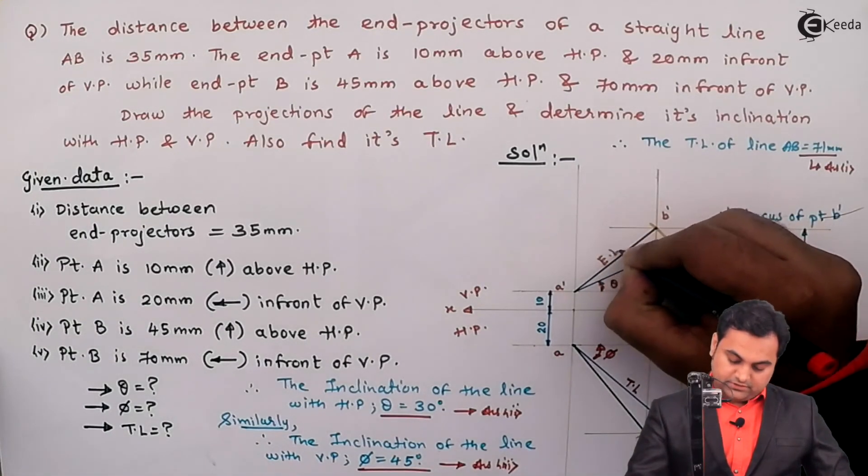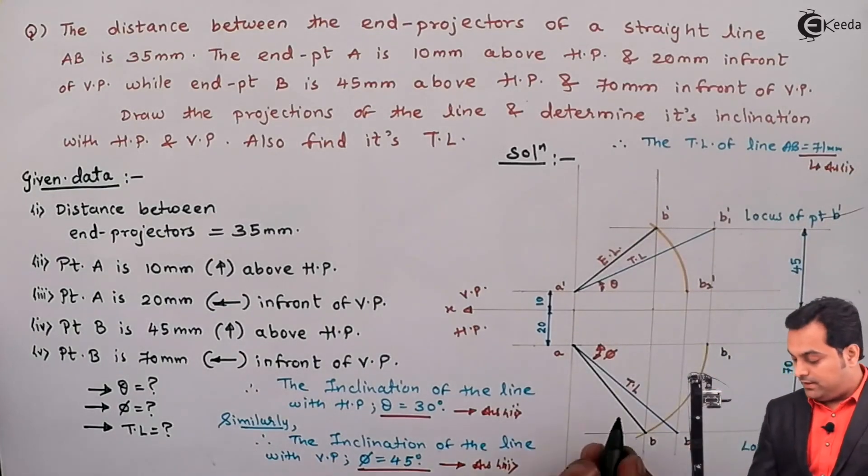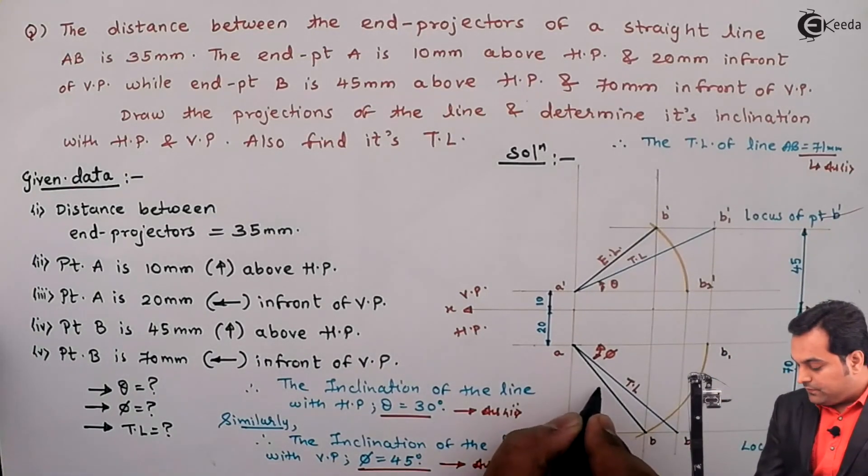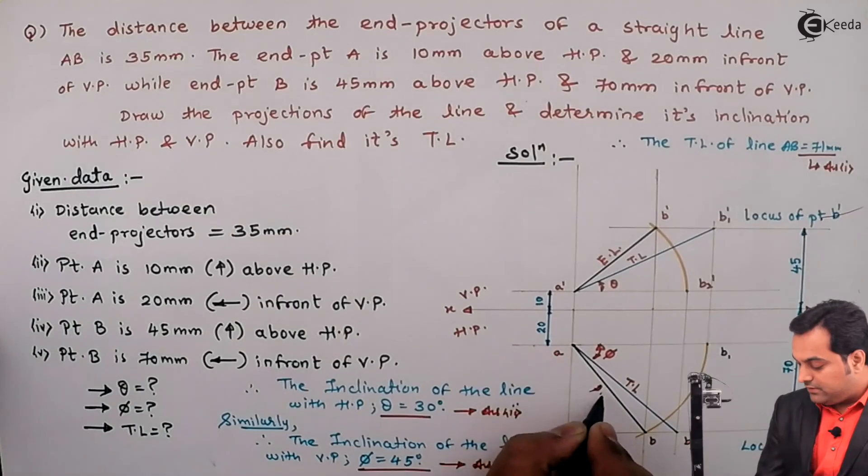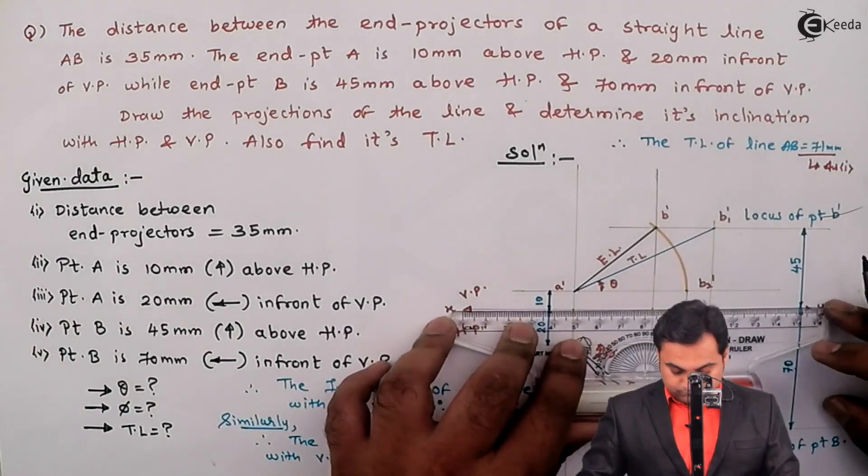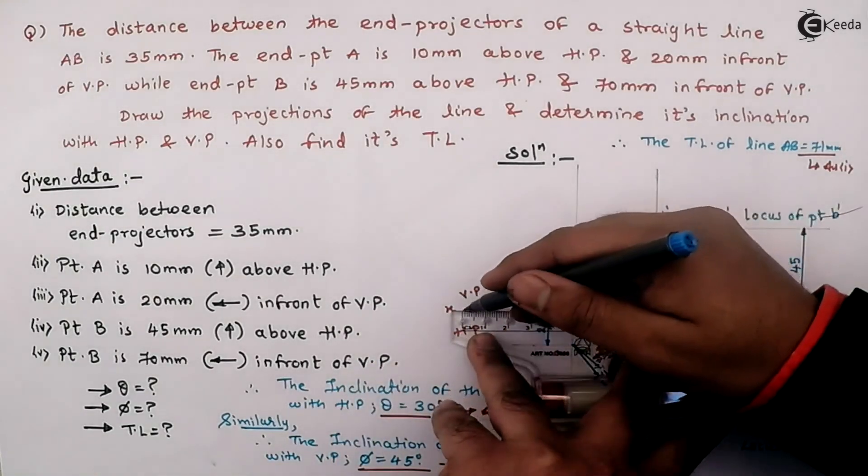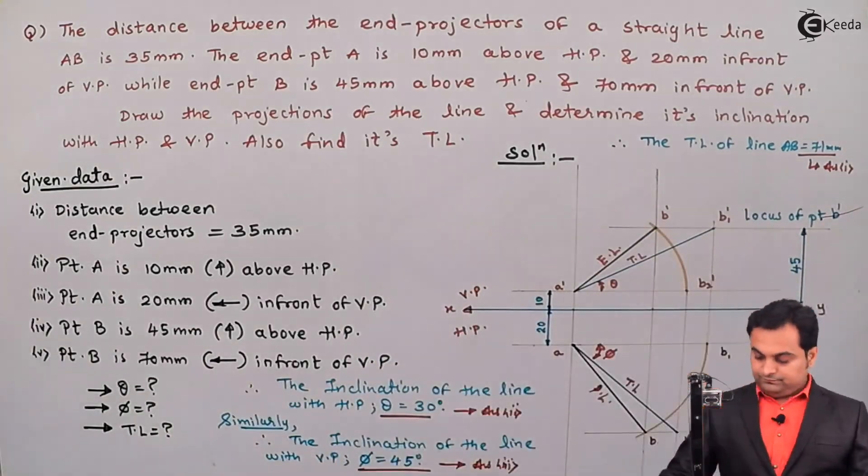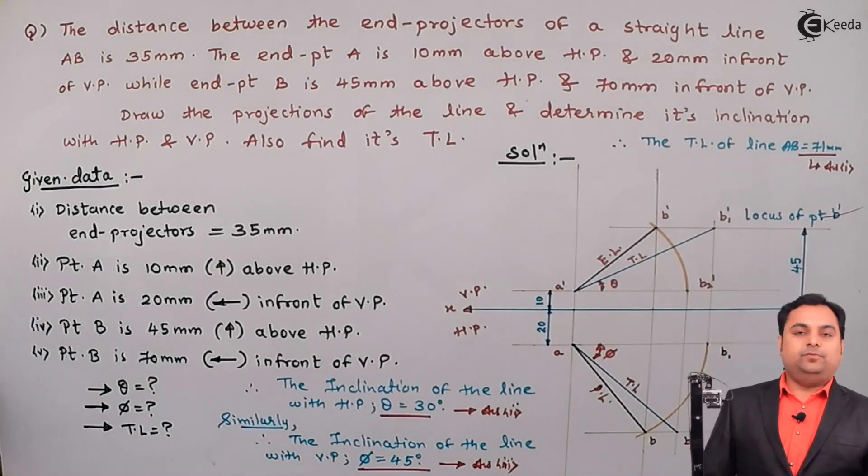This is the elevation length A' B' and here is the PL which is plan length A B. And with this the problem is completed.